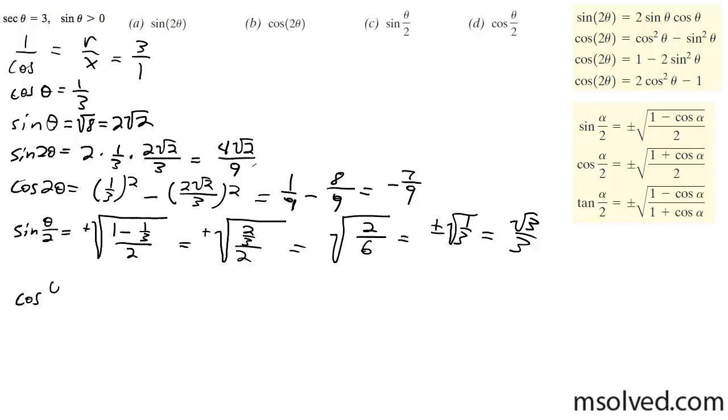And then the half angle of the cosine, that also is going to be a positive value. So we're going to get 1 plus 1 third divided by 2, which is equal to 4 over 3 divided by 2, which is equal to 4 over 6, 2 over 3. And we're going to get 2 root 3 divided by 3.